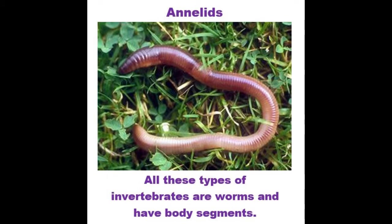Another type we're looking at now is annelids. It seems a bit of a funny word, but it's actually just worms. These include the worms in your garden. If you get a chance and go to your garden and find some worms, you'll see that they have segmented parts — meaning there are little lines on their body — and that's one of the defining features of an annelid, or worm.